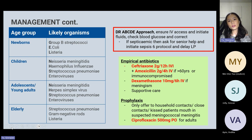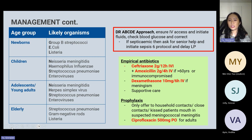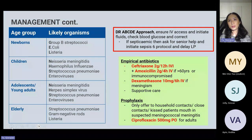Use the Dr ABCDE approach for meningitis management, ensuring IV access, initiating fluids, and checking blood glucose. If the patient is also septicaemic, seek senior help and initiate the Sepsis 6 protocol and delay the lumbar puncture. For antibiotics, typically give ceftriaxone, adding amoxicillin if the patient is over 60 or immunocompromised. Dexamethasone can be given if the patient has meningism; the rest is supportive care. Prophylaxis is offered to household and close contacts in suspected meningococcal meningitis — usually ciprofloxacin in adults.